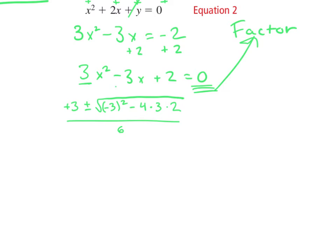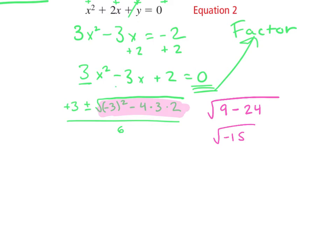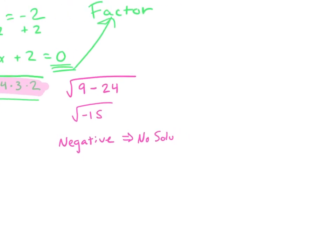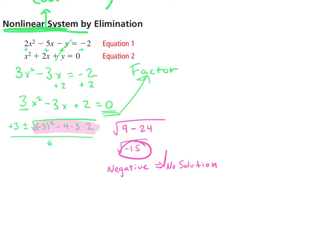Once we get to the quadratic formula, we always want to check under our square root first, because if we get a negative we know we'll have no solution — that means imaginary numbers, which we don't want here. Under our square root: negative 3 squared is 9, minus 4 times 3 times 2, which is 24. So 9 minus 24 is negative. Since we get a negative under the square root, our answer is no solution.